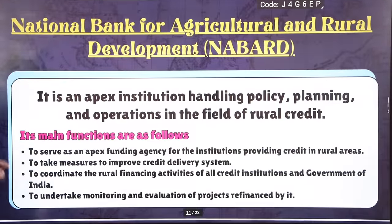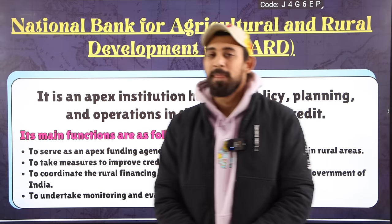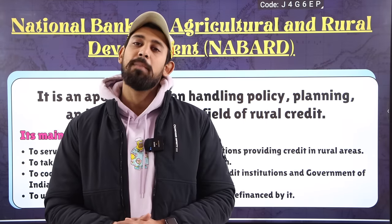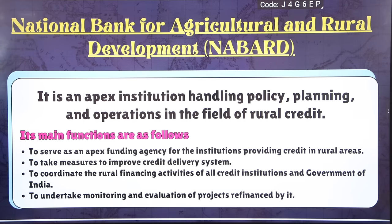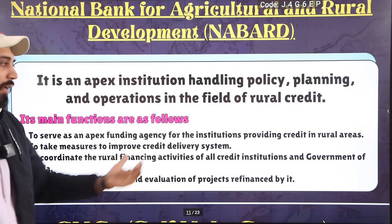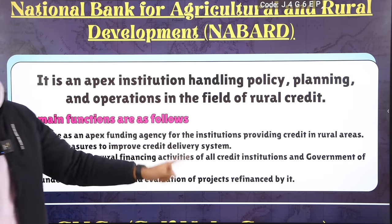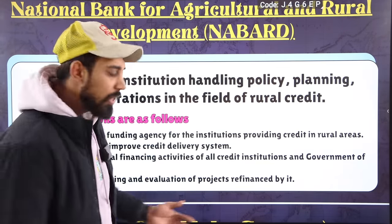The greatest apex body in this field is NABARD — National Bank for Agriculture and Rural Development. Just as RBI is the apex body for normal banking, NABARD is the biggest body for agriculture and rural development. It is a funding agency that provides money at good rates, improves the credit delivery system, coordinates rural financing activities, and monitors and evaluates all projects it has funded.